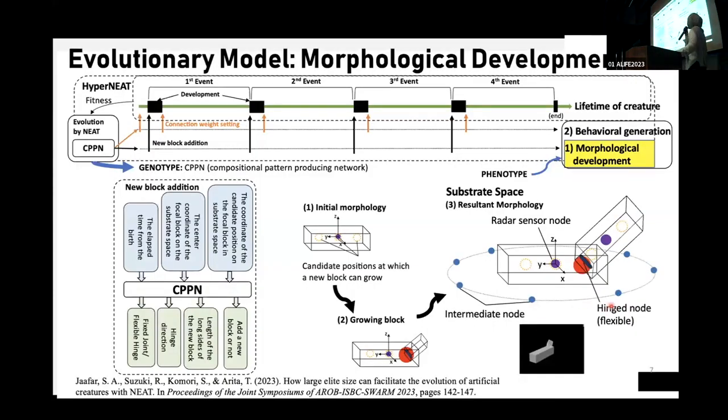This is a little bit more into the morphological development of our creature. Using hyperneat to evolve the creatures, the genome in each of individuals have their own genome, which is known as the CPPN. At the morphological development stage, the CPPN firstly computes the morphological development of creatures by taking the inputs of the coordinates of the blocks. And the output is the addition of new blocks or not, the length, the direction of the hinge, and whether the hinge is fixed or flexible.